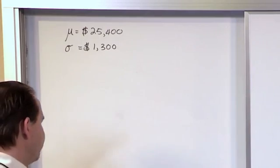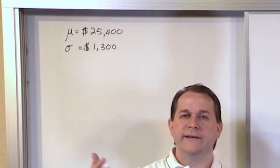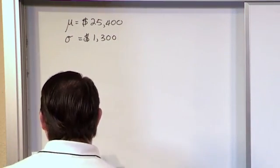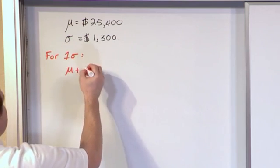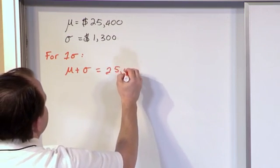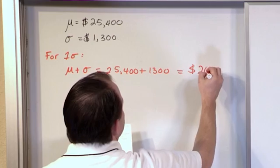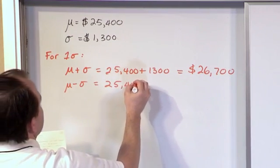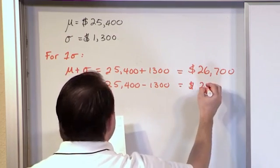We're asked what percentage of graduates have a starting salary between $22,800 and $28,000. So let's look at 1 sigma and 2 sigma and find out what those boundaries are and see if any of them line up. For 1 sigma on either side of the mean, the mean plus 1 standard deviation is 25,400 plus 1,300, which gives us 26,700. The mean minus 1 standard deviation is 25,400 minus 1,300.